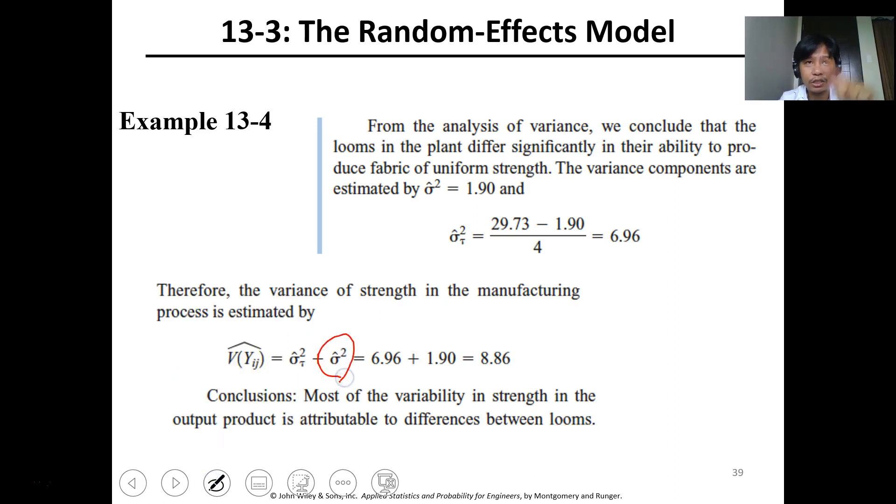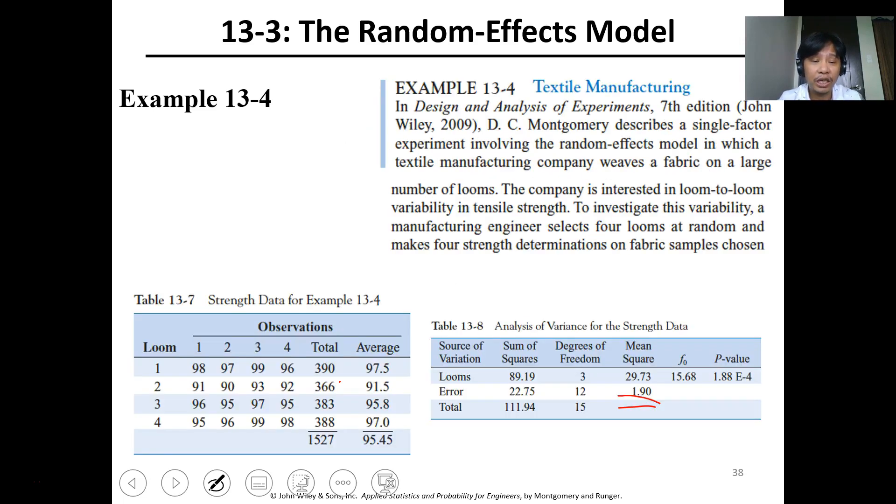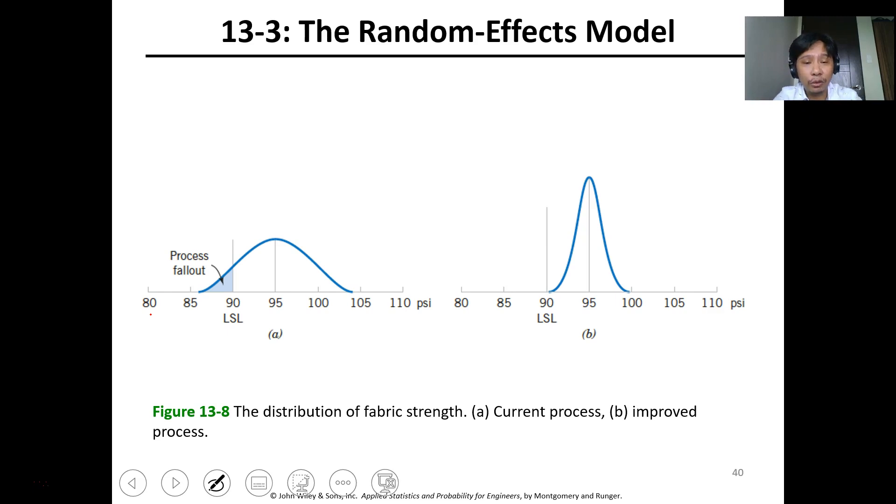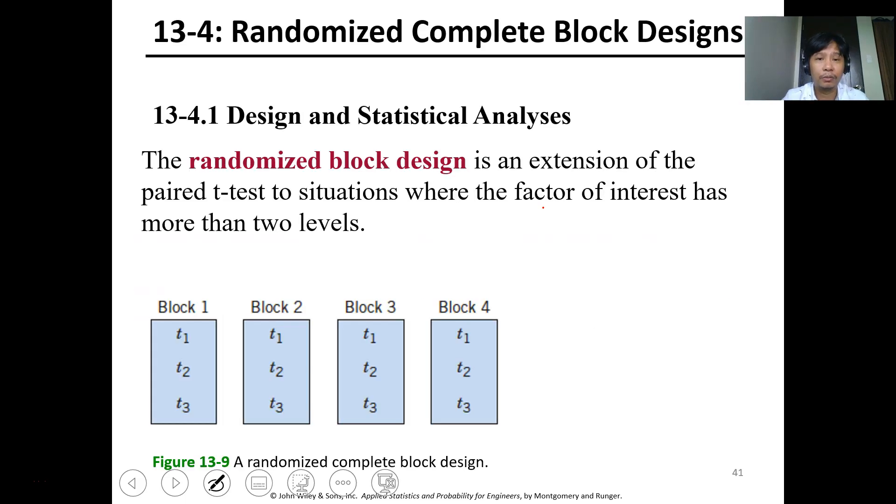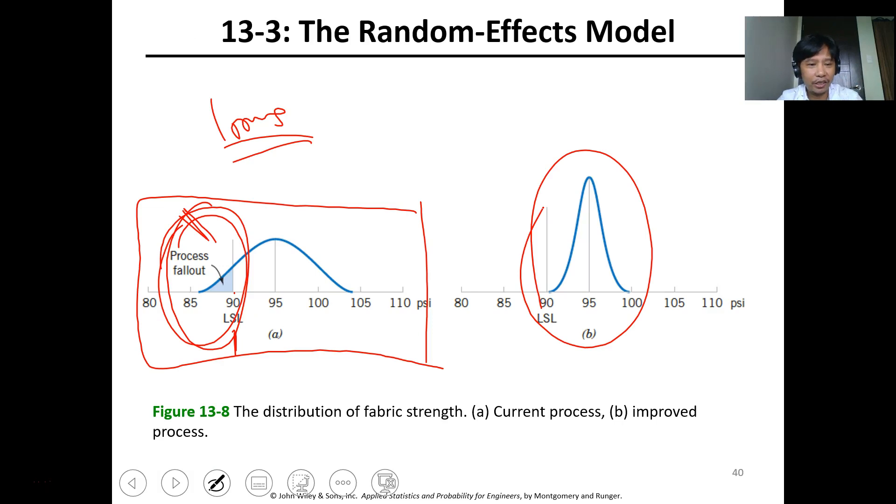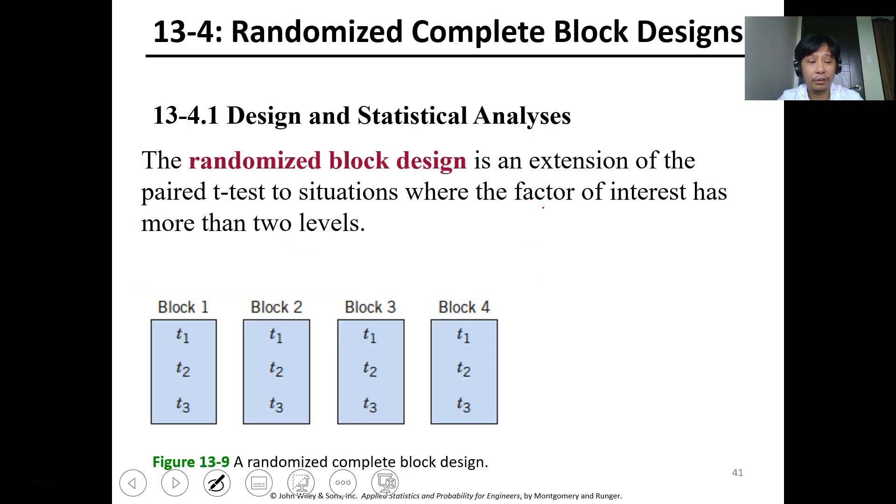From this one, this is the original data in the manufacturing plant. We see there's a process fallout. This is the limit, the lower limit to have an acceptable product. If we can adjust or identify the looms or impact on the loom processing being used, then we can further reduce this distribution where the fallout could be minimized. We must minimize the fallout. So I'll end here before we proceed with the randomized complete block.